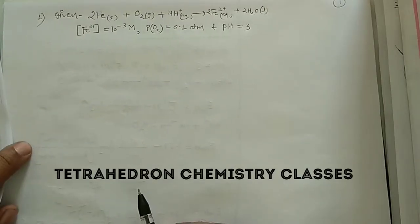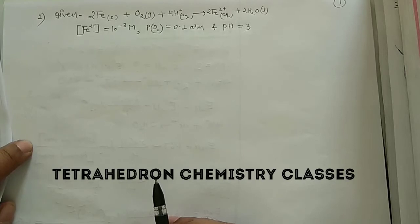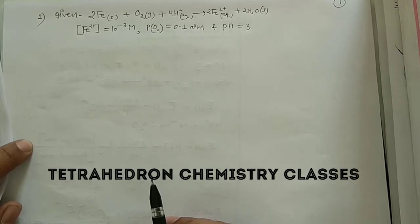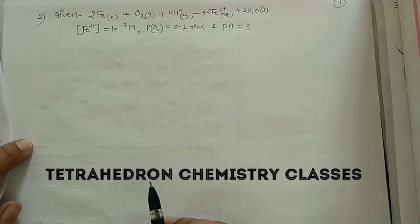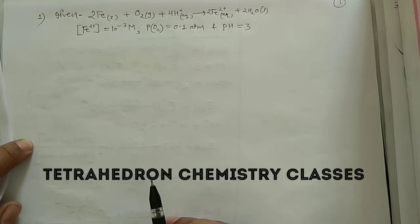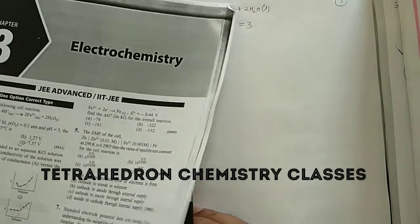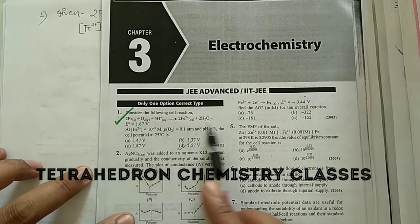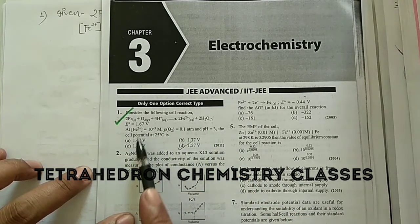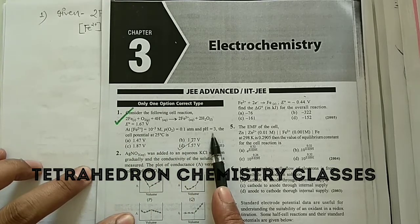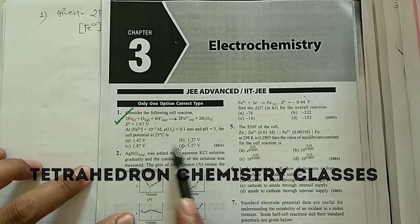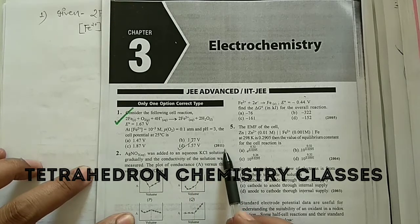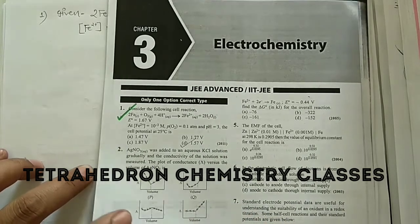Hello friends, welcome to the Tetrahedron Chemistry Classes. In today's class we will see the numericals asked in previous year IIT JAM examinations. The section of the numericals would be electrode potential based on the Nernst equation as well as free energy. Here we have some numericals from previous examinations. The first numerical gives a reaction with electrode potential, concentration of iron, pressure of oxygen, and pH. You have to find the cell potential of the electrochemical cell. This question is from the 2011 examination.